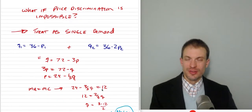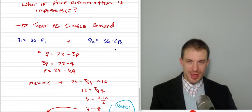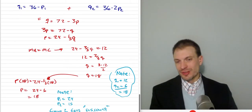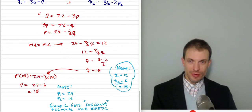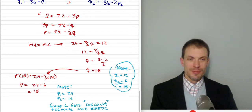What if price discrimination is impossible? Then the firm treats both segments as a single demand curve by summing the demands: Q = 72 minus 3P, giving inverse demand P = 24 minus one-third Q. Marginal revenue is 24 minus two-thirds Q, set equal to marginal cost of 12, yielding a total quantity of 18 and an associated price of 18.